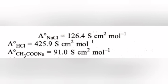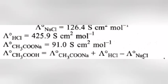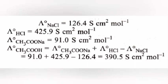So, to find molar conductivity at infinite dilution of CH3COOH, add molar conductivity at infinite dilution of CH3COONa and HCl and subtract the value of molar conductivity at infinite dilution of NaCl. So, the final answer is 390.5 S cm² mol⁻¹.